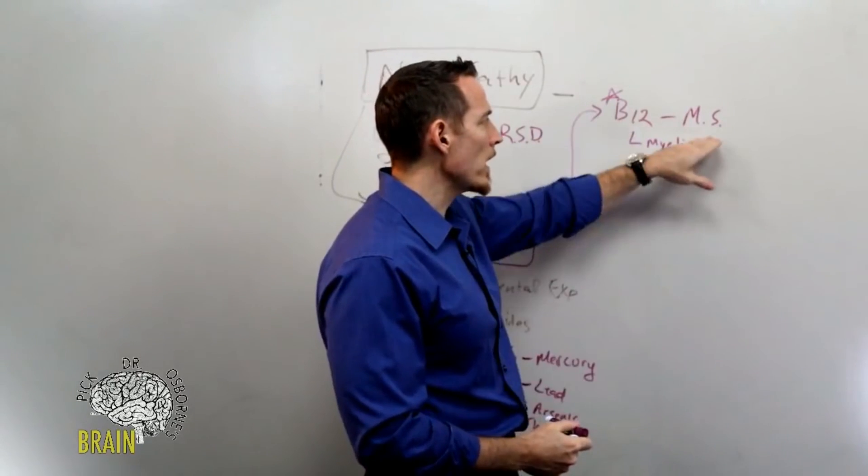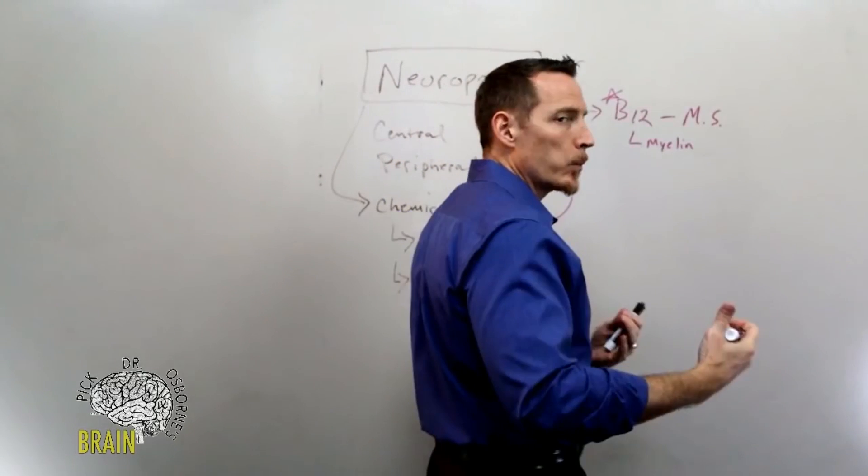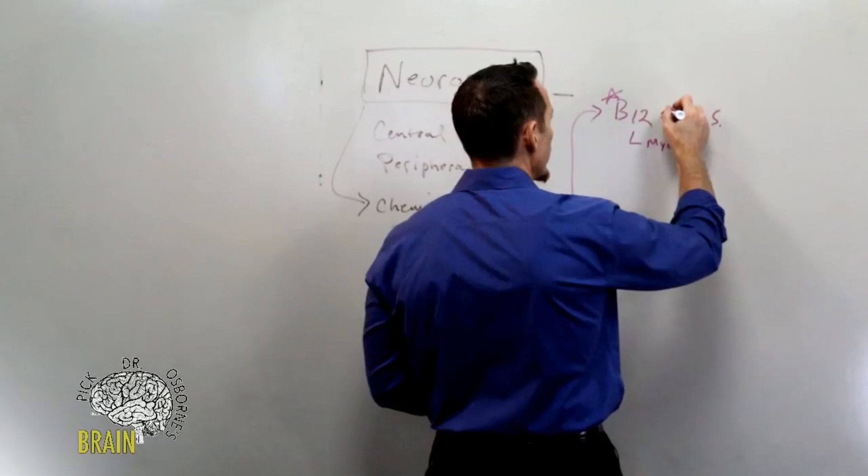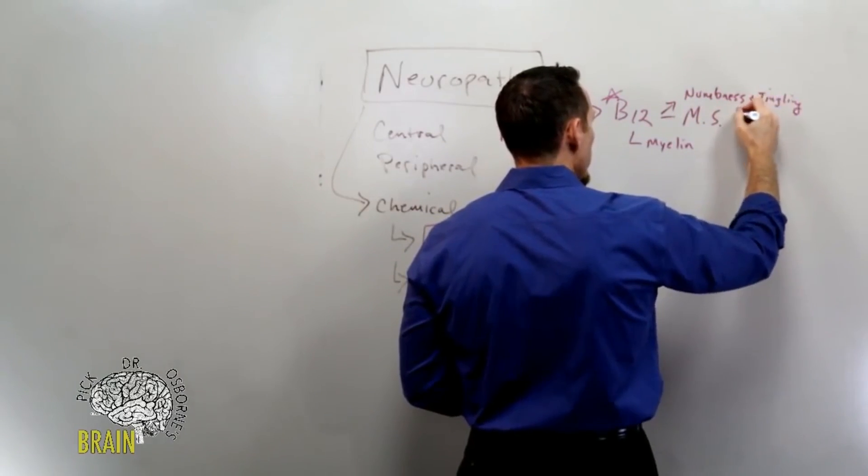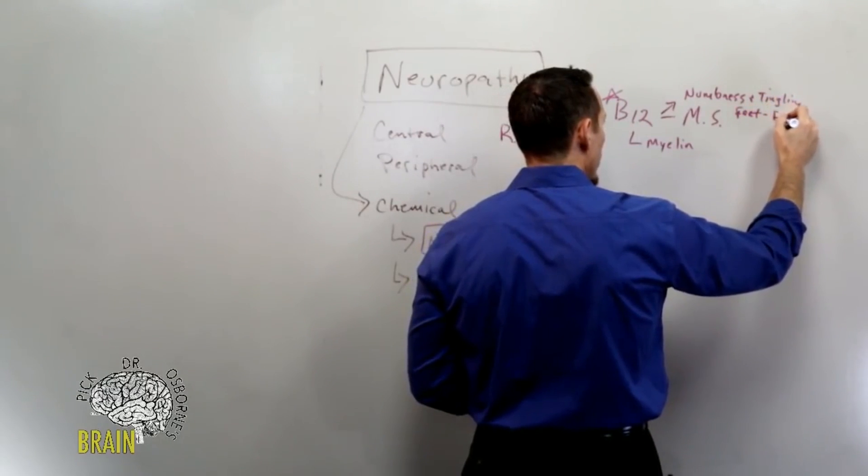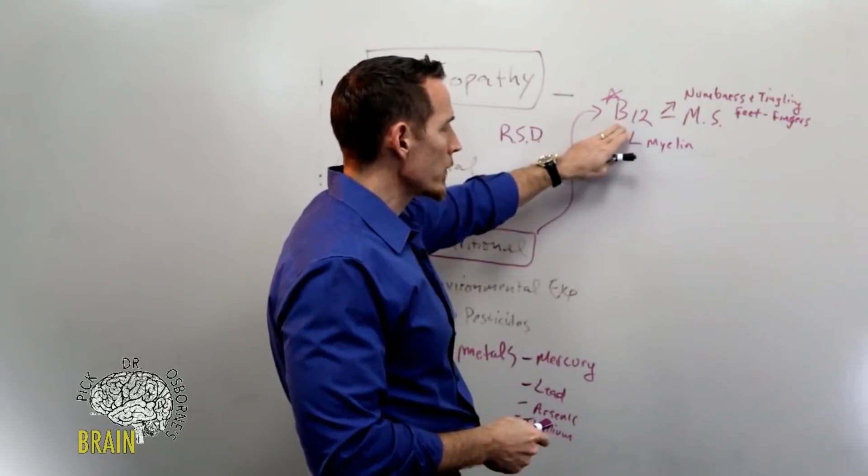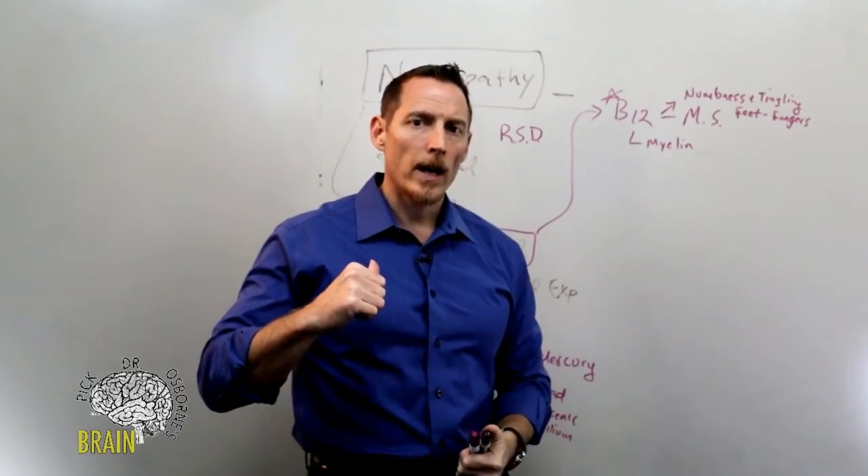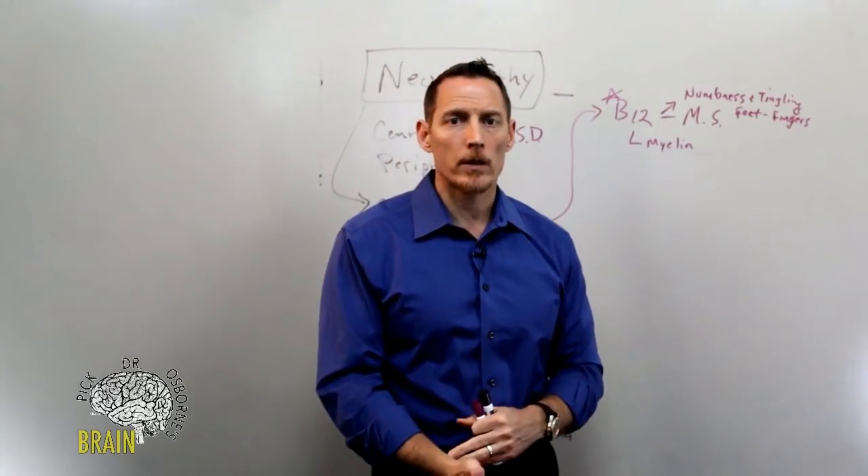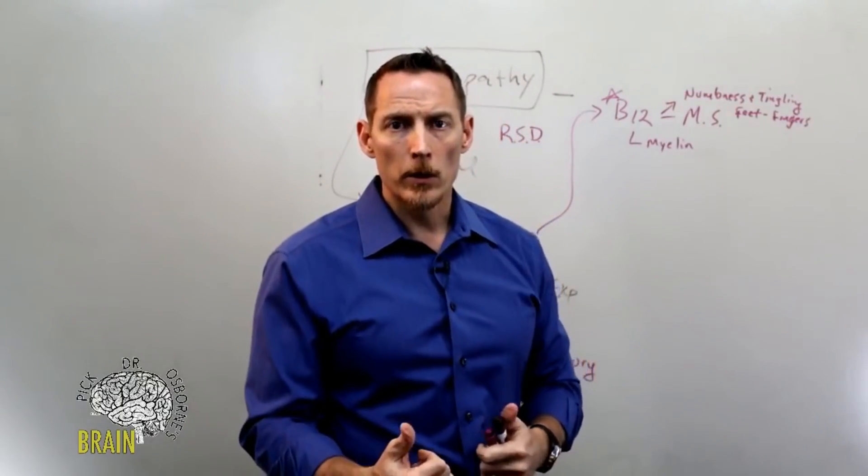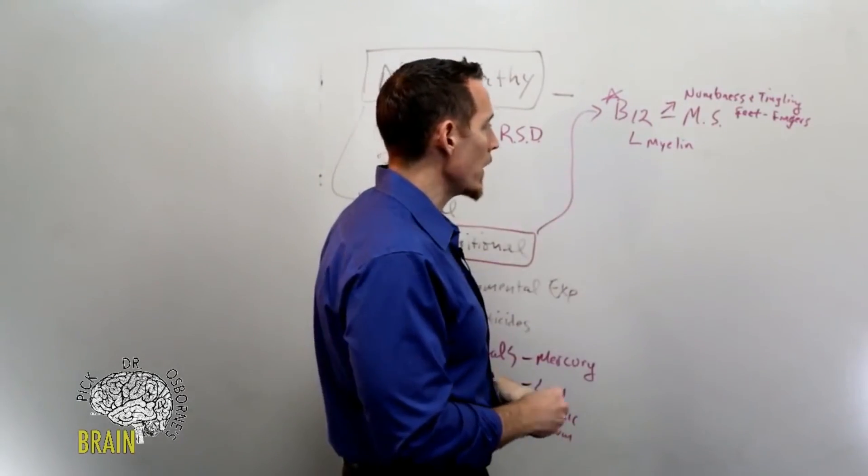This typically manifests early onset as numbness and tingling. Before MS is developed, most people don't wake up one day and have all the symptoms of multiple sclerosis. They generally will manifest first with numbness and tingling, and this typically occurs in the feet, toes, can sometimes also be the fingers. Think toes and fingers, these are common neuropathies that can be B12 induced. If you've been to the neurologist and you've had the brachial plexus and disc ruled out, you've had different nerve impingement or entrapment syndromes ruled out like carpal tunnel syndrome, if those have been ruled out, you need to start asking your doctor about B12.